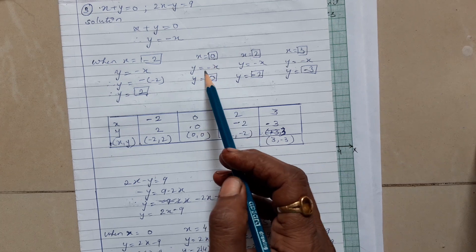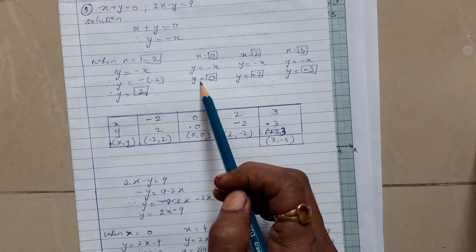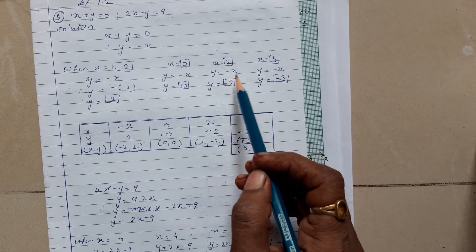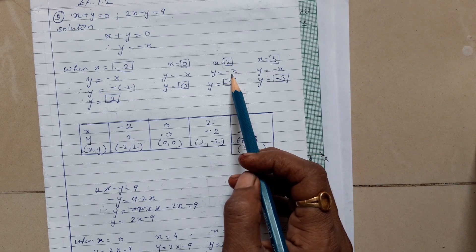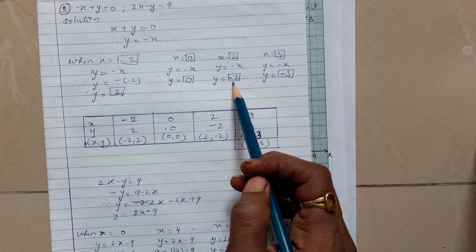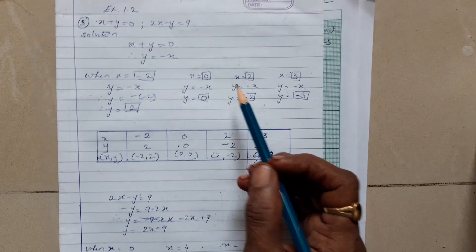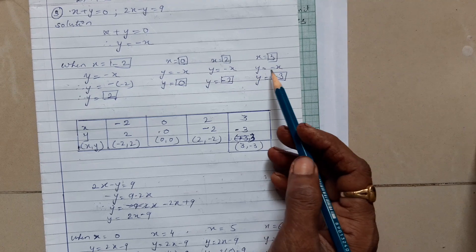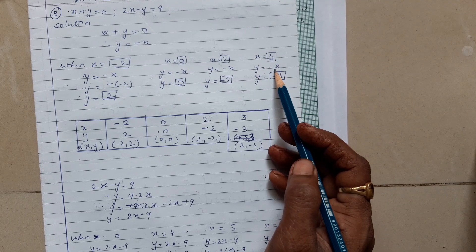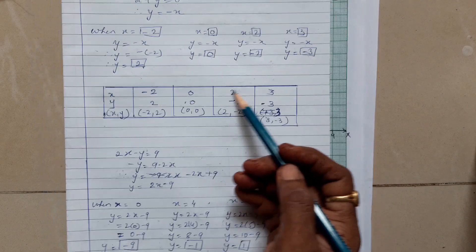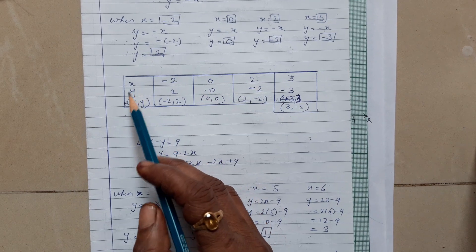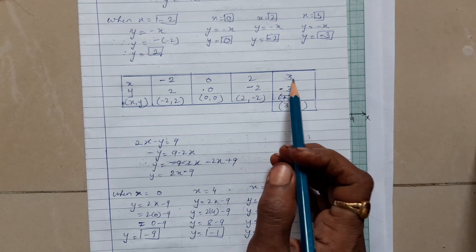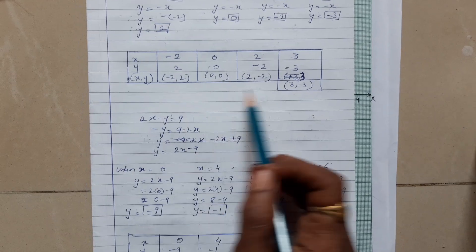For x = 0, substitute into y = -x to get y = 0. For x = 2, y = -2. For x = 3, substitute the value of x in the equation to get y = -3. Make the table: x: -2, 0, 2, 3 and y: 2, 0, -2, -3.